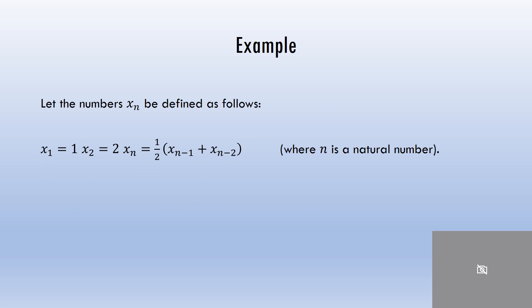Let's look at an example. Let the numbers x sub n be defined as follows: x sub 1 is equal to 1, x sub 2 is equal to 2, and x sub n is equal to one-half of x sub n minus 1 plus x sub n minus 2, where n is a natural number. I want to prove that x sub n is always between 1 and 2 for all n.